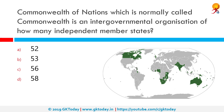The Commonwealth of Nations, normally called the Commonwealth, is an intergovernmental organization of how many independent member states? The correct answer is 53. The Commonwealth of Nations, historically known as the British Commonwealth, is a unique political association of 53 member states, nearly all of them former territories of the British Empire.